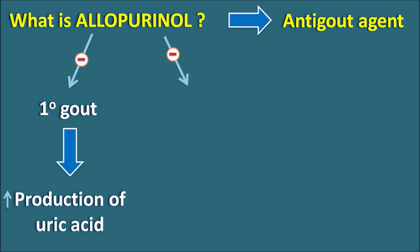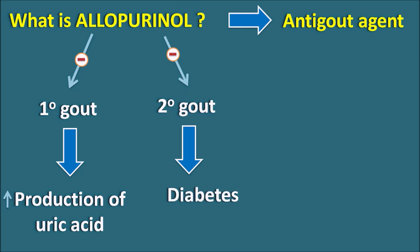Similarly, this drug can also be used in the treatment of secondary gout, where there is again increased levels of uric acid within the plasma, but this may be due to other disorders, diseases, or conditions like certain drug uses which may increase uric acid levels. For example, in patients having diabetes as well as in renal failure, there may be a chance of increased levels of uric acid within the body. In such cases, allopurinol can be used to control the uric acid levels.